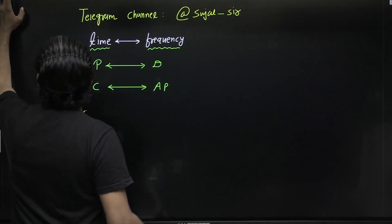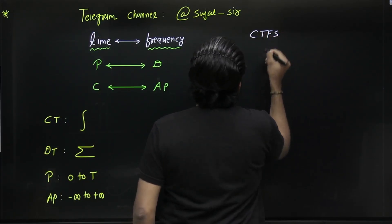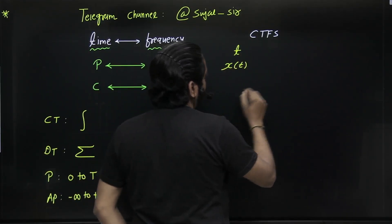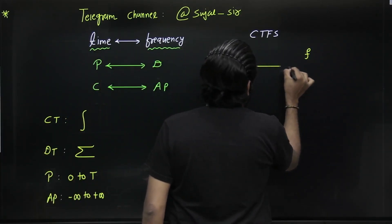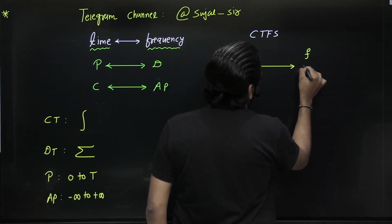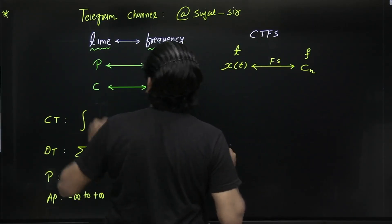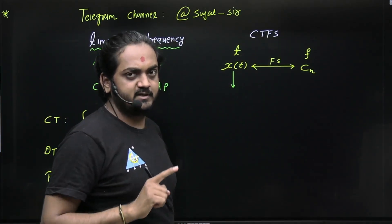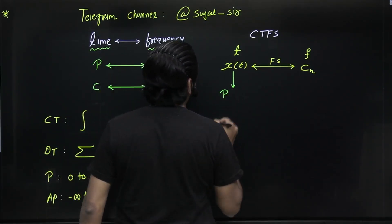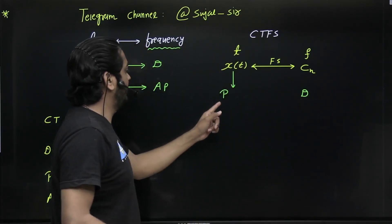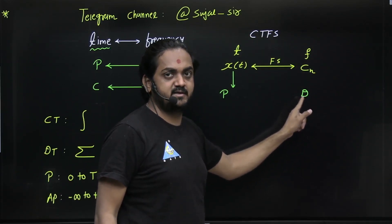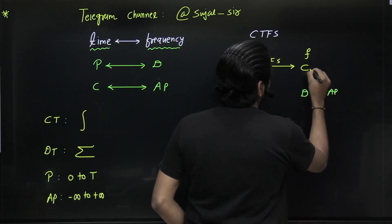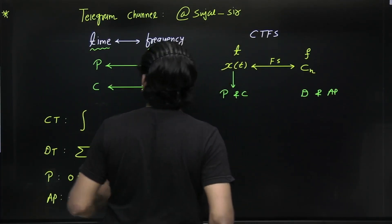For CTFS — Continuous Time Fourier Series — the signal in the time domain is X(t), which is continuous in time. The corresponding exponential Fourier series coefficient is Cn. Since Fourier series is applicable only for periodic signals, and periodic in one domain corresponds to discrete in the other domain, Cn will be discrete in frequency and aperiodic.